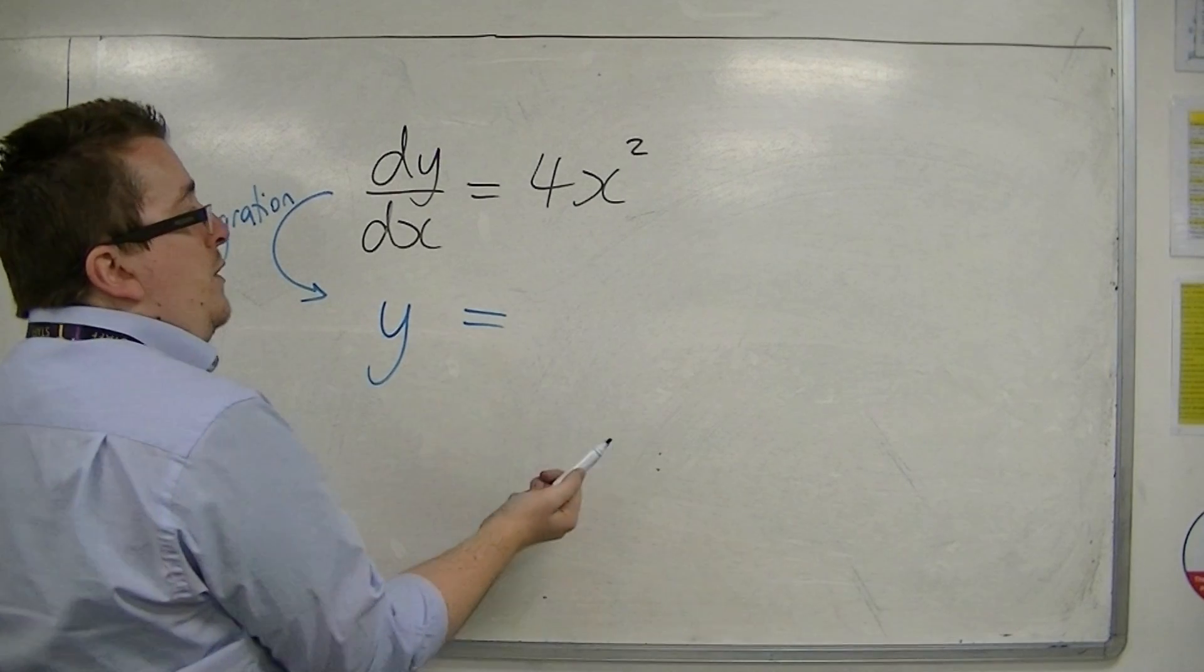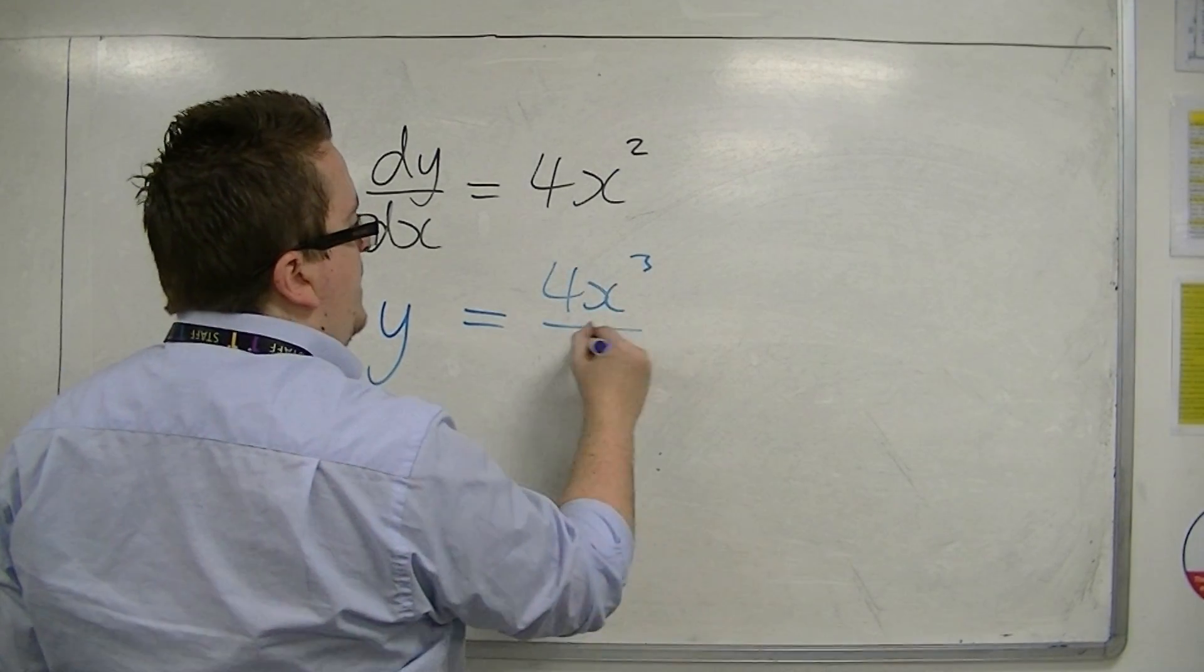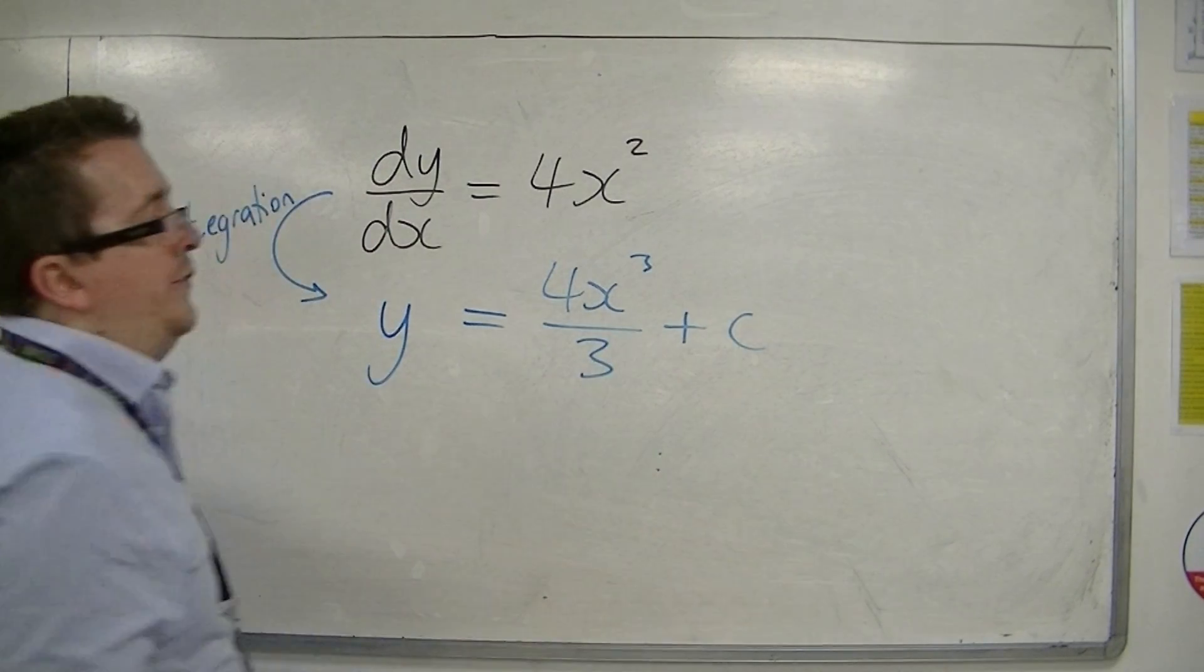So we integrate 4x squared with respect to x. So add 1 to the power, divide by the new power, and add a constant c.